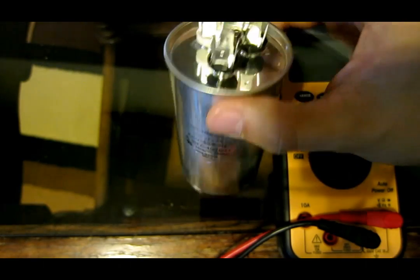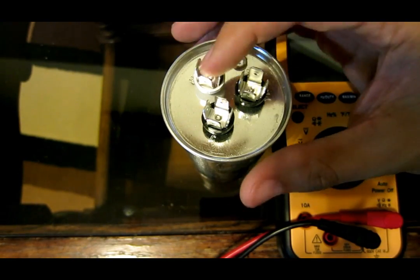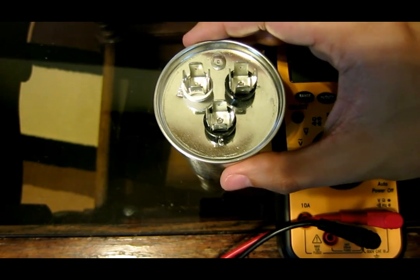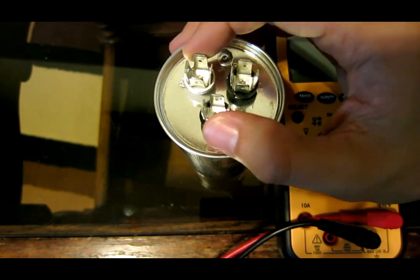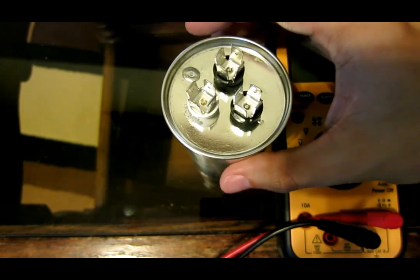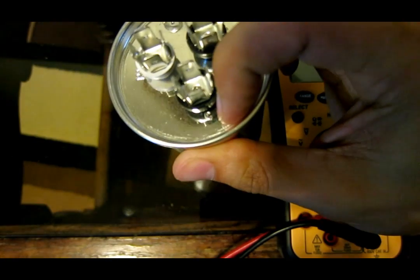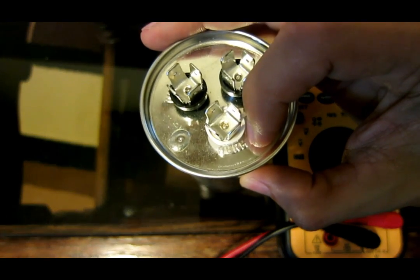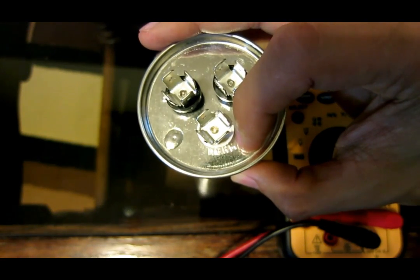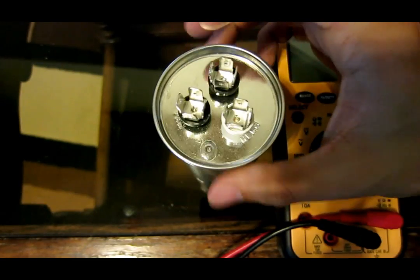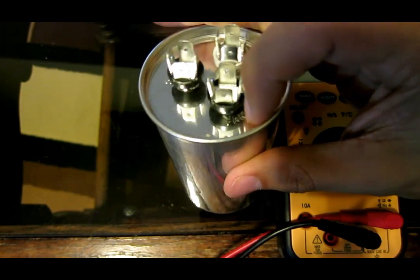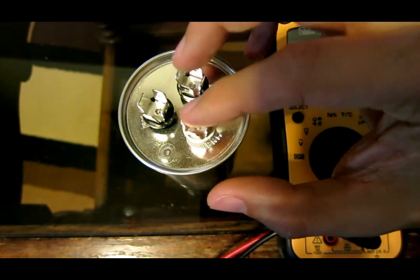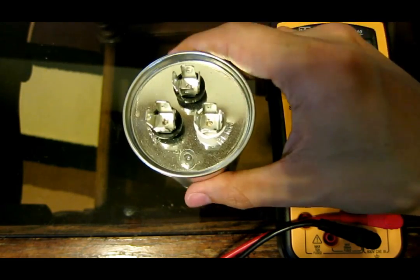Some run capacitors only have two terminals, and some have three. What happened is that they basically combined two capacitors into one. First of all, there are three things. First, you have your common, C right there. Then you have your HERM, H-E-R-M, this is where your compressor goes towards. HERM stands for hermetic, I think. And then you have FAN, F-A-N. Other capacitors might have common and FAN, and then you have another capacitor, common and HERM. But this one is all in one.